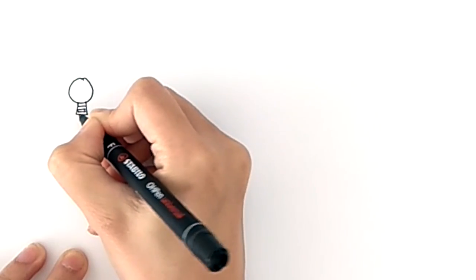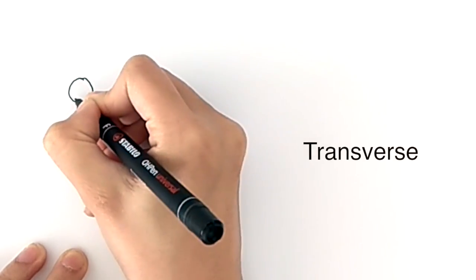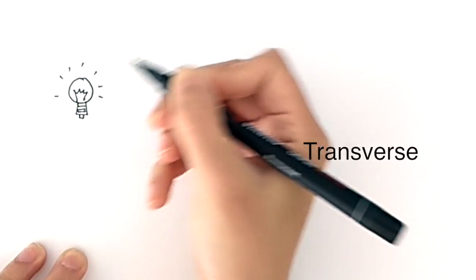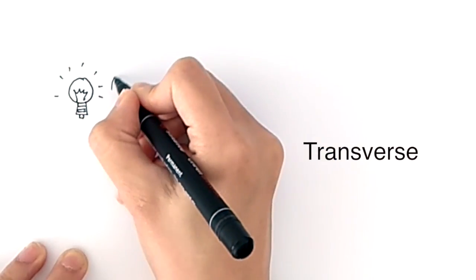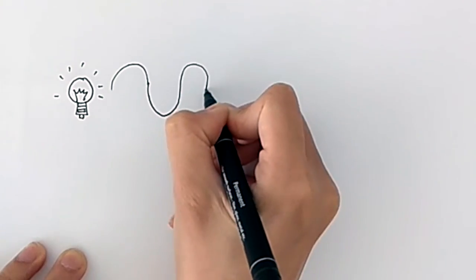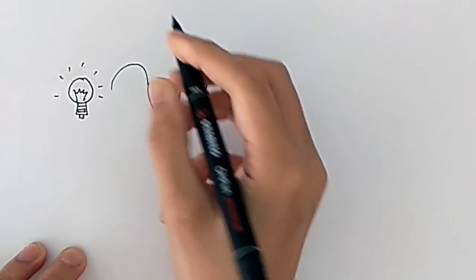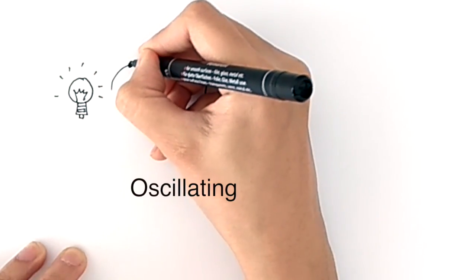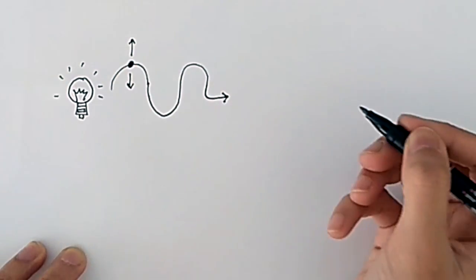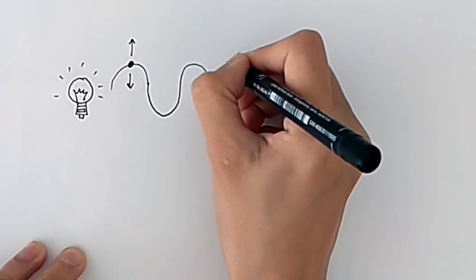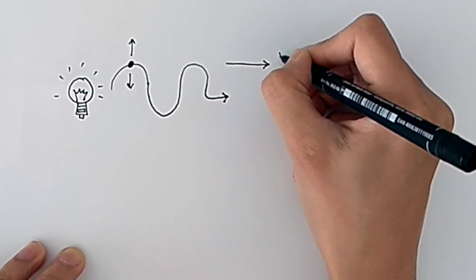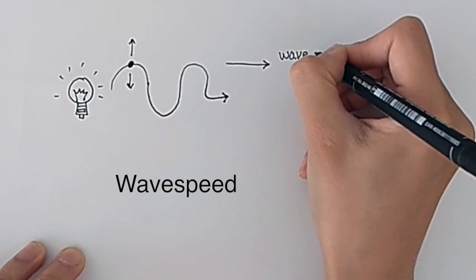A light source like a lightbulb gives out transverse waves. Here is a diagram of a transverse wave propagating to the right. Even though the particles themselves are simply oscillating vertically about a certain point, the shape of the wave is moving towards the right, and it's moving at a certain speed. We call this the wave speed.